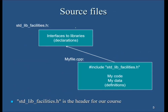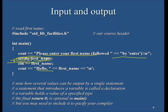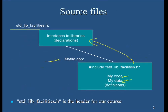As discussed earlier, this is the header file we use. Hash include means you go to the library — it is an interface to the libraries or declarations. We have my code and my data. The data is what we are talking about today — my code, my data, followed by the definitions.